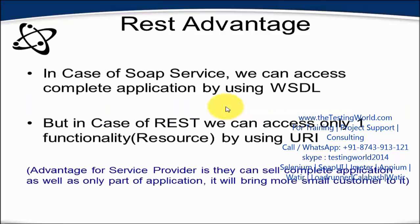In the case of SOAP services, we can access the complete application using WSDL. This means if I want to buy any web service, I have to buy the complete application, because in SOAP we cannot access each and every functionality individually. But in the case of REST, we can access each and every functionality — we call it a resource — by using URI.